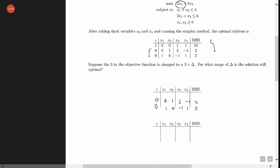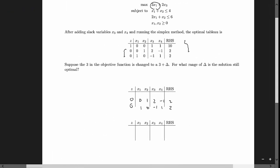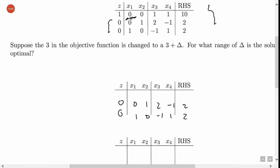And so now, the only thing that's going to change is row 0. And by the fundamental insight, we know that when I change this 3 to a 3 plus delta, this 0 is going to change to a negative delta. And that's going to be the only change. So let me fill in this table right here, negative delta, and then the rest of row 0 is going to be the same.